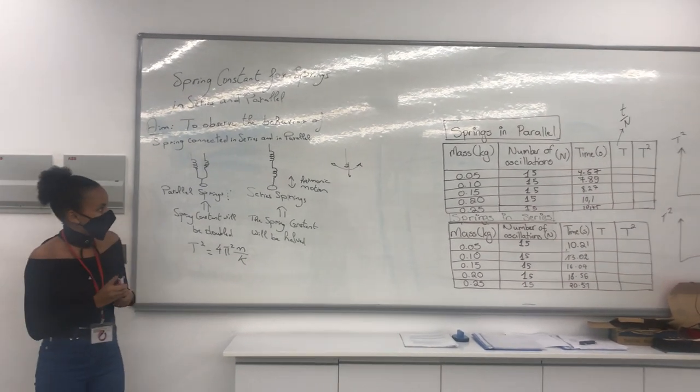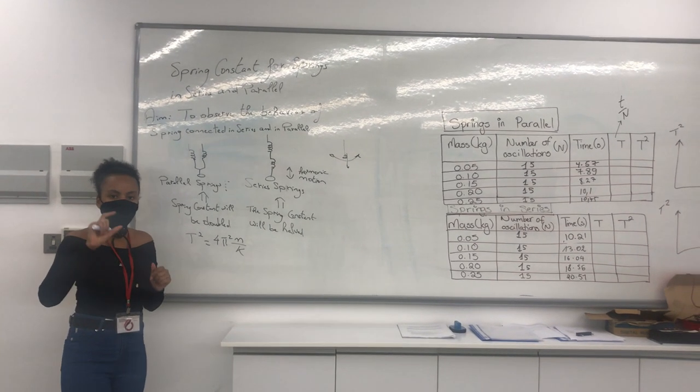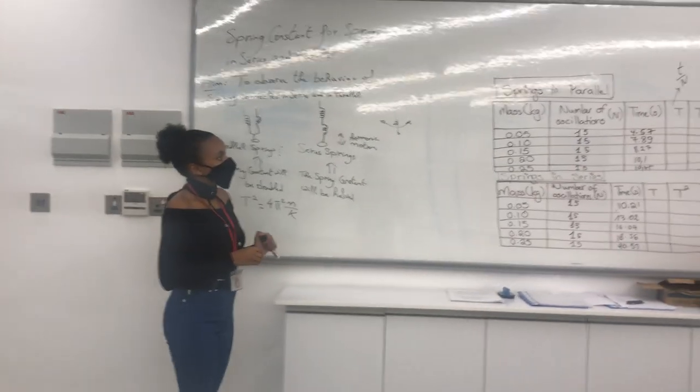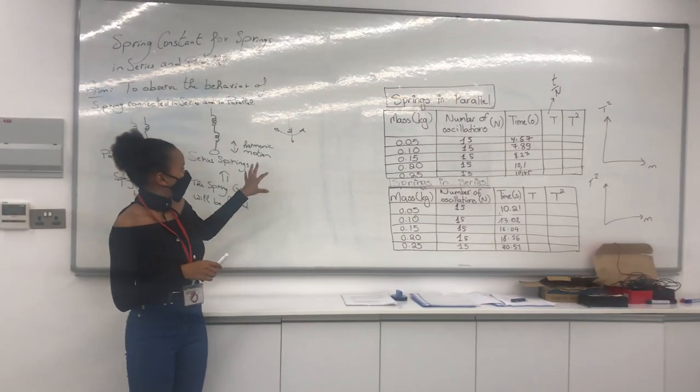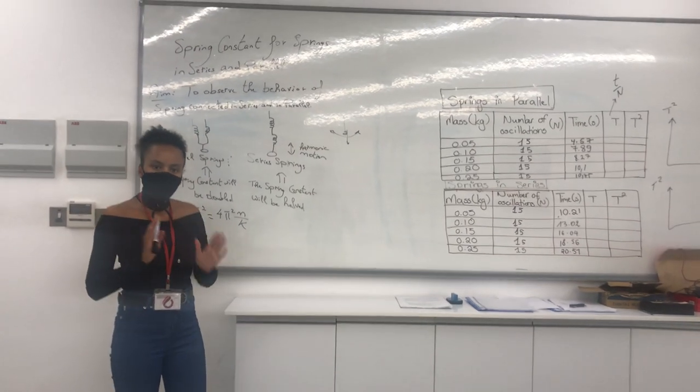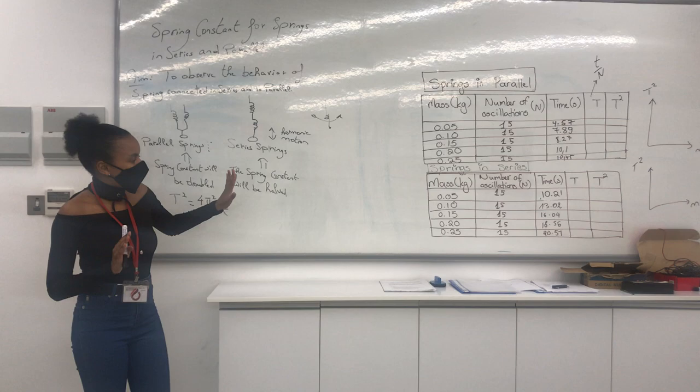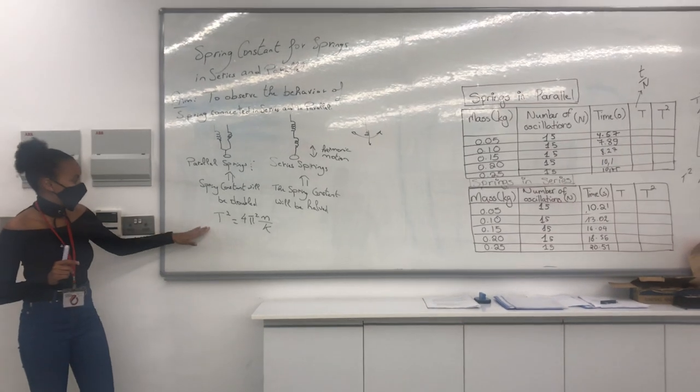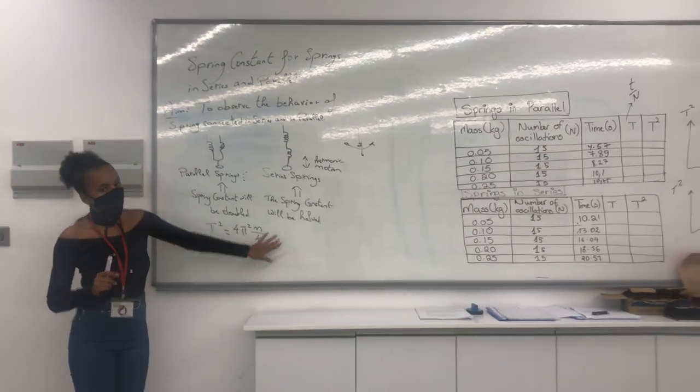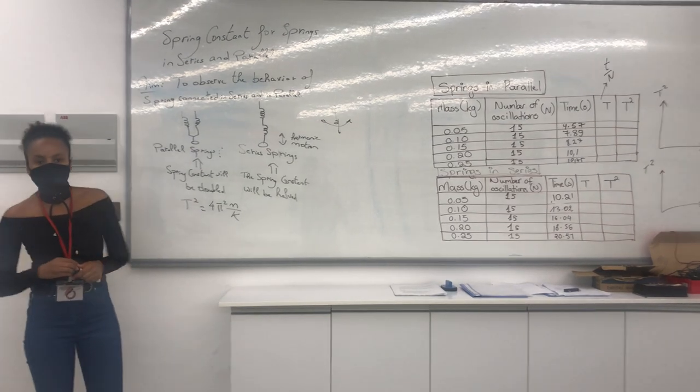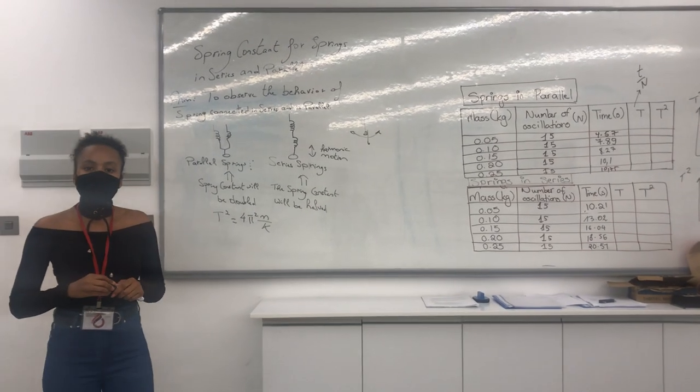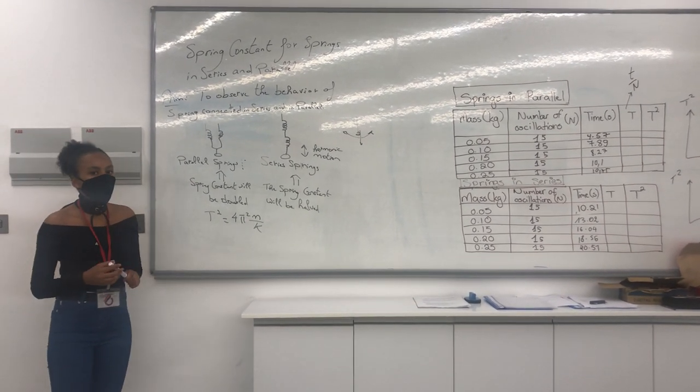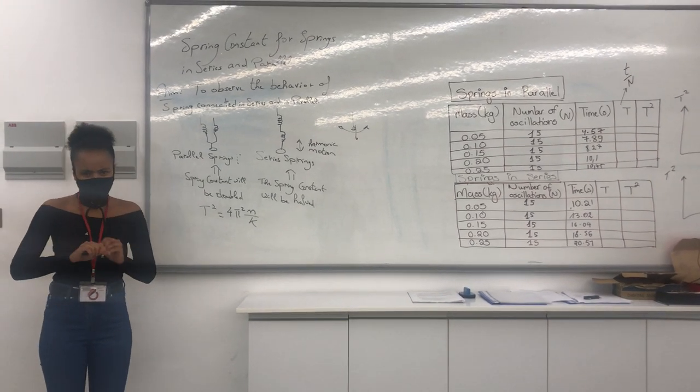Last week's experiment, we used the length, the change of length, to calculate our spring constant. At this time, we are going to be using the period t, so we'll be using the harmonic motions of the springs and the masses to calculate the k. The equation that we'll be using, this is the equation that you will state in your reports, is t squared equals 4 pi squared m over k. This equation should look familiar to you because this equation was used in experiment 1 for simple pendulum, where we were also calculating, where we were using the periods to calculate gravity, force of gravity.